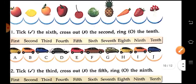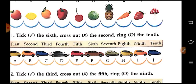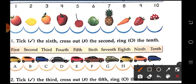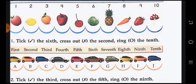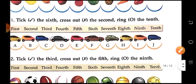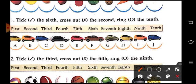So let's tick the 6th, cross out the 2nd, and ring the 10th. So what do we do here? We have to tick the 6th one, and cross out the 2nd one and ring the 10th one. Now again here: tick the 3rd, cross out the 5th and ring the 9th.